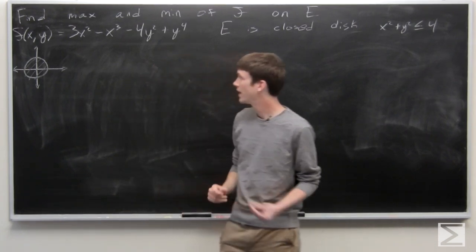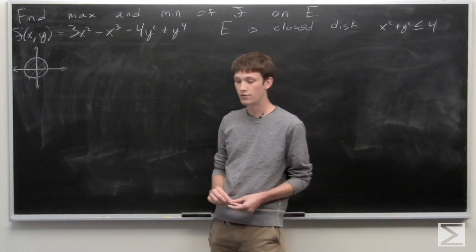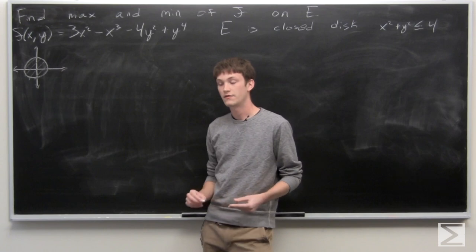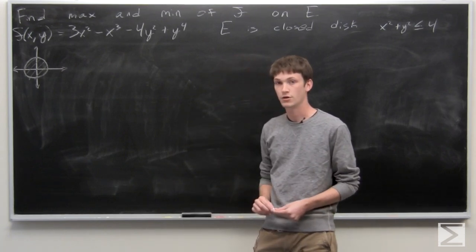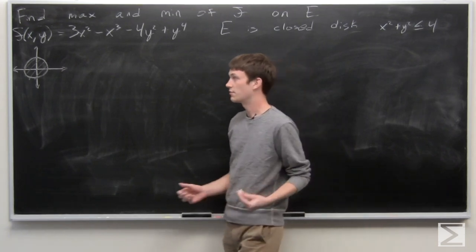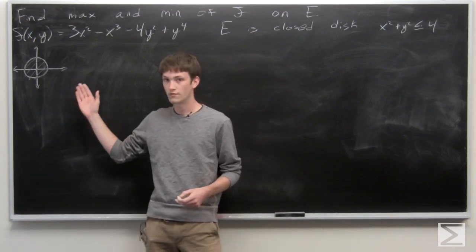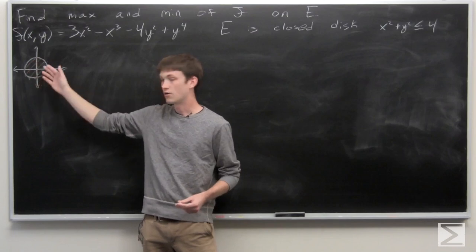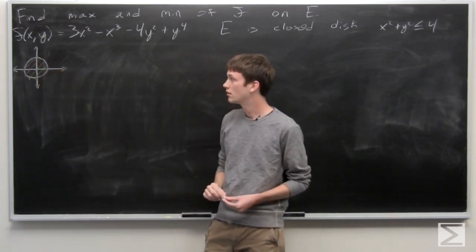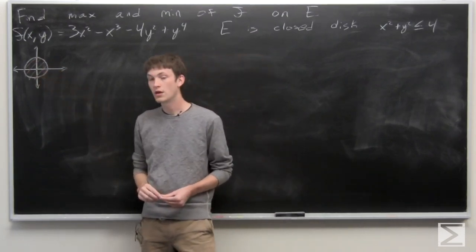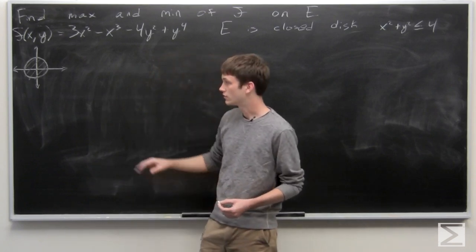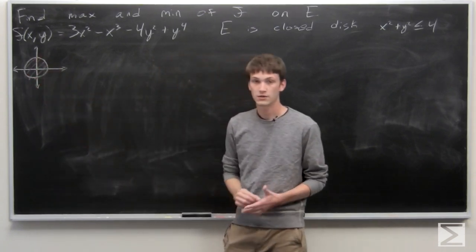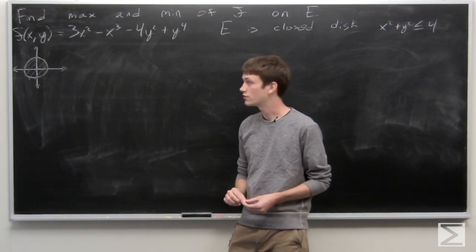To find the max and min of our function, we want to calculate the gradient vector in the normal way and set it equal to zero, and see if there are any interior critical points. So we're going to look for points where the gradient vector equals zero and lie within region E. Then we'll also check the boundary to see if perhaps the global max or min exists there.